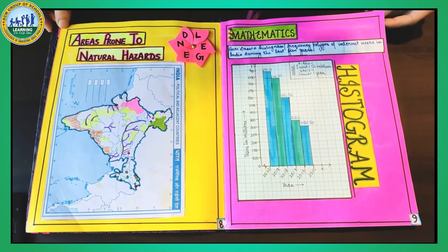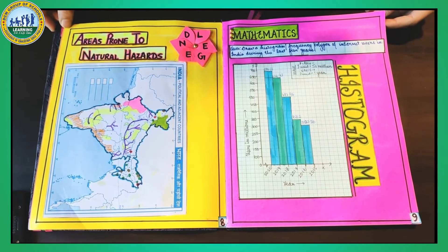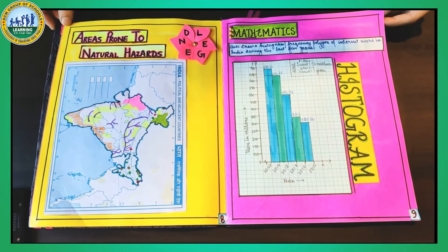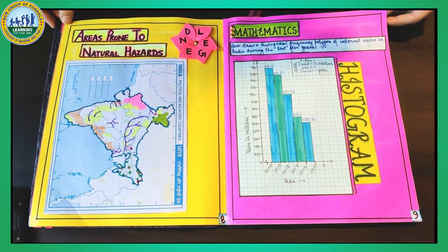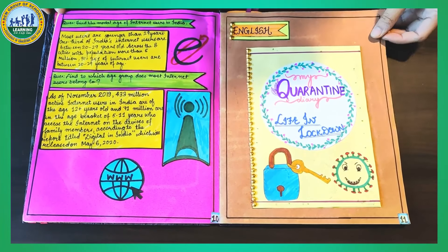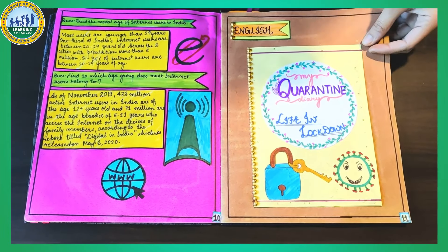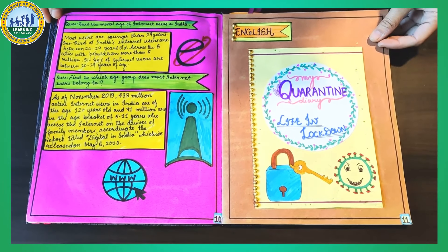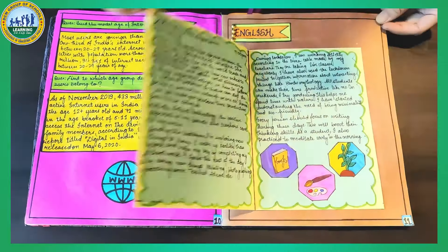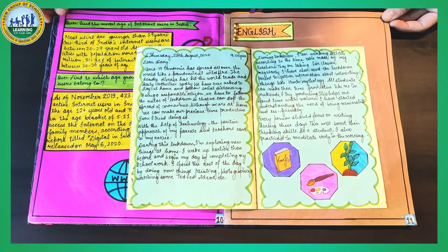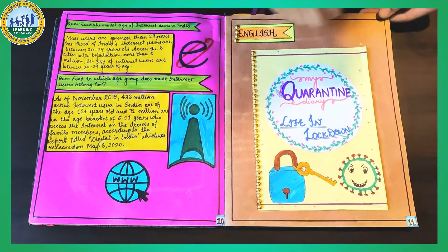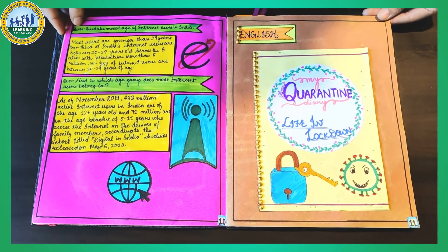In mathematics, this histogram shows the internet users in India in the last five years, and we can discover a significant increase in the number. The modern age of internet users in India is 12 plus years, which shows that most users are youth. This diary entry shows my experience during the lockdown — what new things I discovered and how technology came to our rescue when schools were closed.